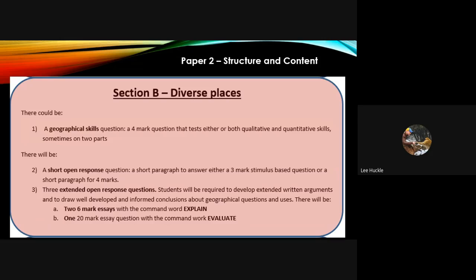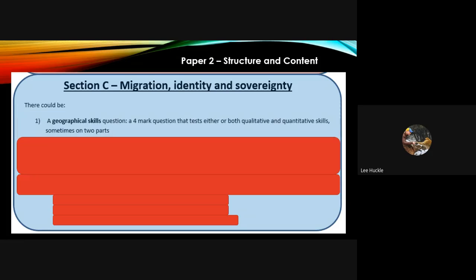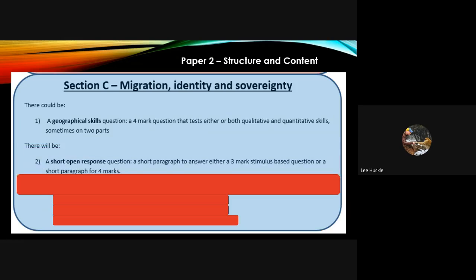Finally, migration, identity and sovereignty in Section C. Remember, do not answer the health section, you have not studied it. Again, here there could be the geographical skills question, four marker. What we know for sure, there will be a short open response question based on a stimulus, three or four marks.